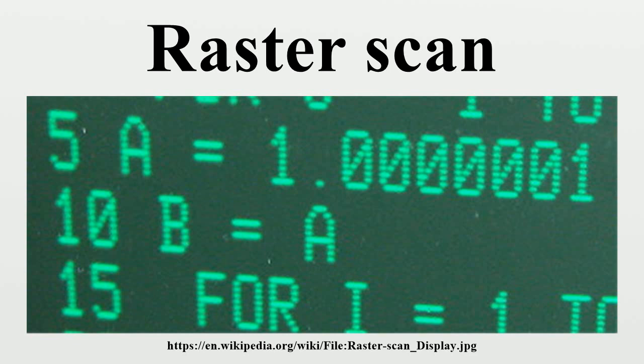Raster scan on CRTs produces both the impression of a steady image from a single scanning point through several technical and psychological processes. These images then produce the impression of motion in largely the same way as film. A high enough frame rate of still images yields the impression of motion, though raster scans differ in a few respects, particularly interlacing.